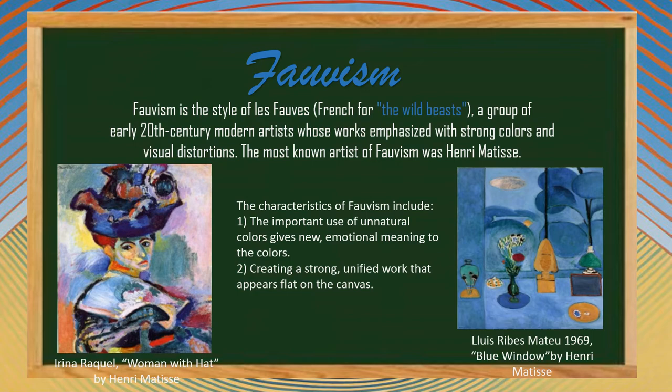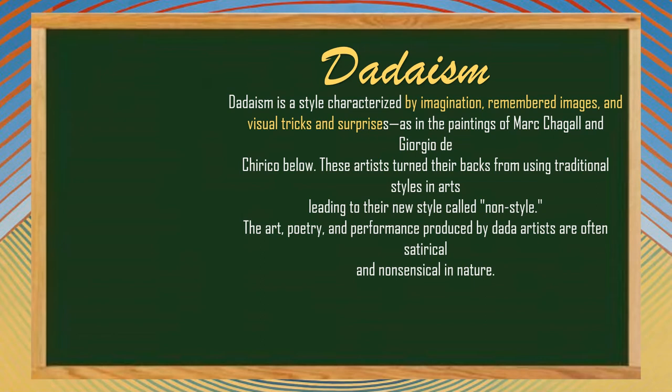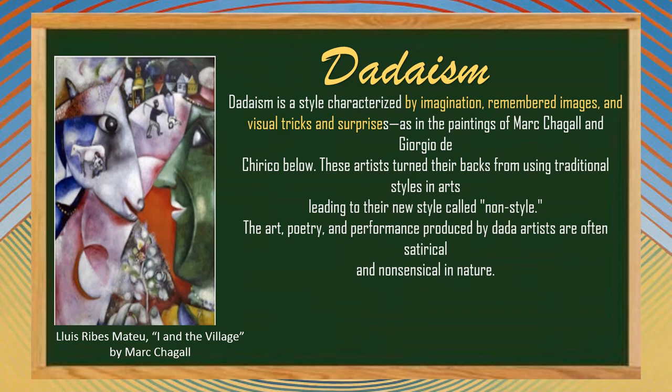Fauvism's characteristics include the important use of non-natural color to give new emotional meaning, creating strong and unified works that appear flat on the canvas. Dadaism is a style characterized by imaginative remembered images and visual tricks and surprises, as in the paintings of Marc Chagall and Giorgio de Chirico. These artists turned their backs on traditional styles, leading to a new style called Dadaism, whose art, poetry, and performance was often satirical and nonsensical.